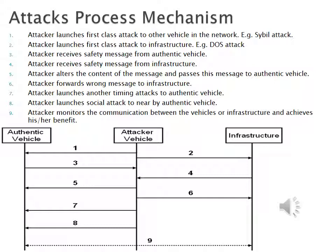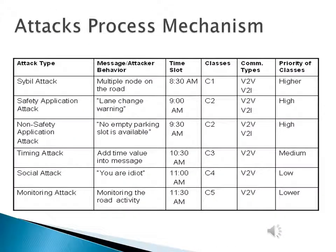The attacker alters the content of the message and passes this altered message to an authentic vehicle. The attacker forwards a wrong message to the infrastructure. The attacker then launches timing attacks against an authentic vehicle, and launches a social attack against a nearby authentic vehicle. Finally, the attacker monitors the communication between vehicles or infrastructure and achieves his or her benefit — completing the attack process mechanism.